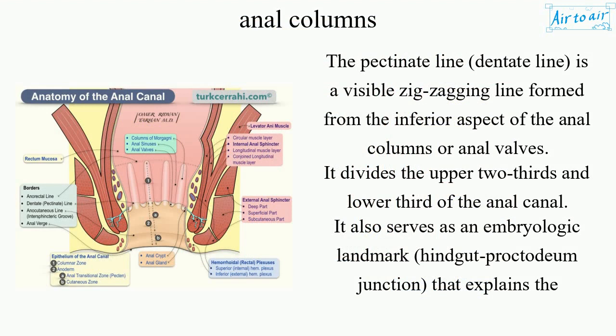The pectinate line, also called the dentate line, is a visible zigzagging line formed from the inferior aspect of the anal columns or anal valves. It divides the upper two-thirds and lower third of the anal canal.